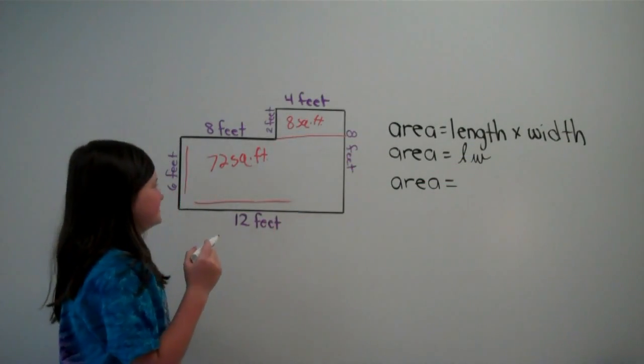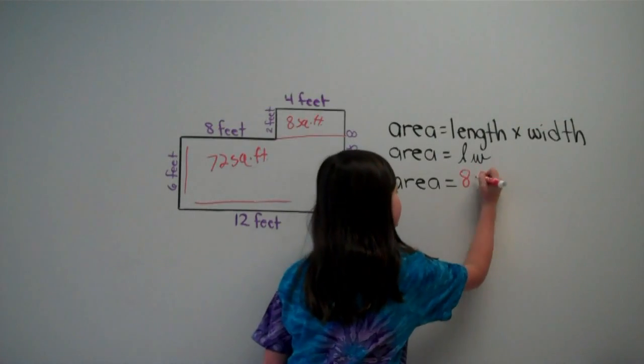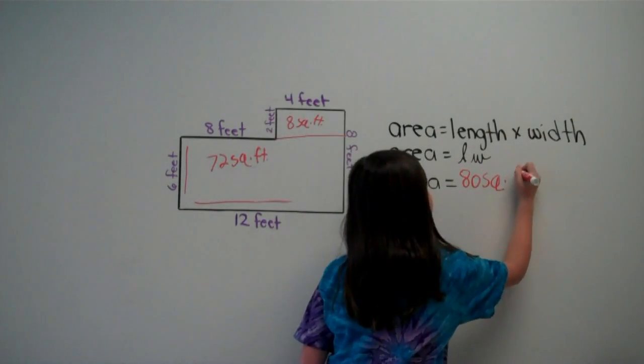You would have to add them up, which 72 plus 8 equals 80 square feet.